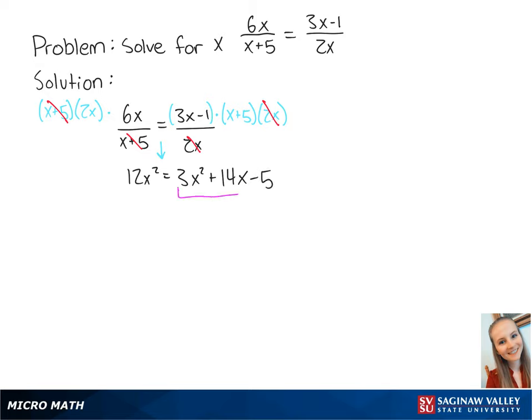To solve for x, we want the right side of the equation to be equal to 0. So we're going to subtract 3x squared plus 14x minus 5 from both sides of the equation, leaving us with 9x squared minus 14x plus 5 is equal to 0.